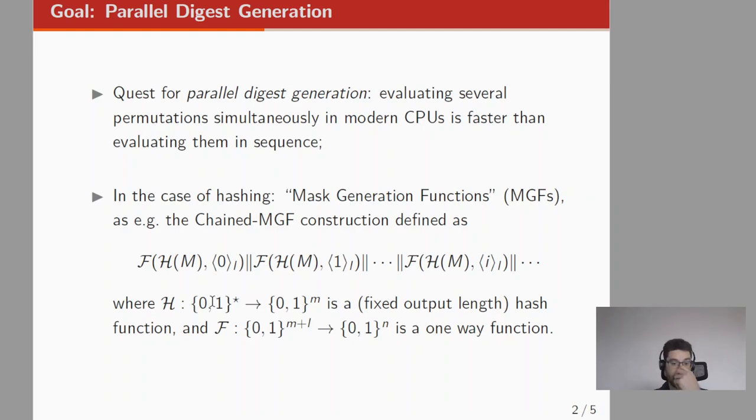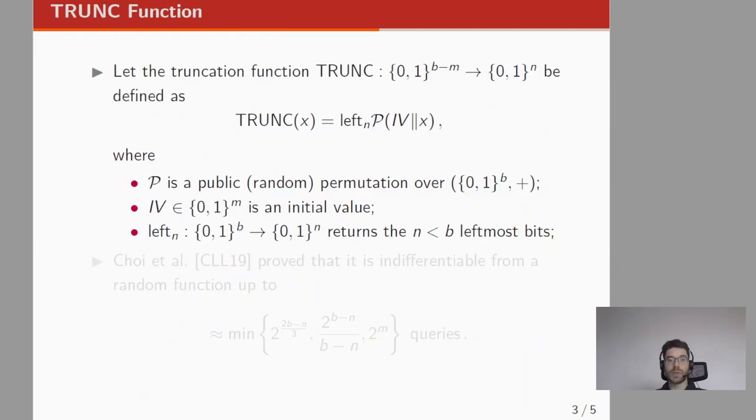One possibility is making use of a truncated function. The truncation function TRUNC takes an input b minus m bits and returns n bits. We take an initial value IV of m bits and concatenate it with the input x. Then we apply a permutation P to this concatenation and finally we truncate, returning the n leftmost bits.